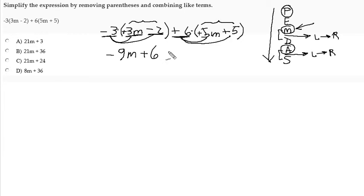Positive times positive makes positive. 6 times 5, the number parts first, make 30. Then there's an m out of that term. So we distributed a positive 6 to the first term, positive 5m, and we get positive 30m. Now we distribute the positive 6 to the second term in this quantity, and conduct this multiplication: positive times positive makes positive, 6 times 5 makes 30.